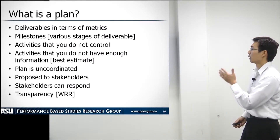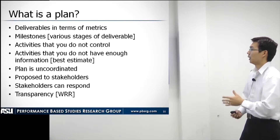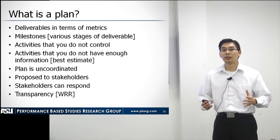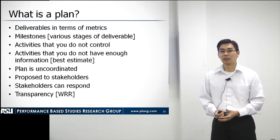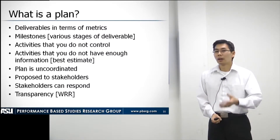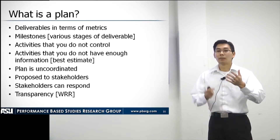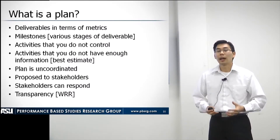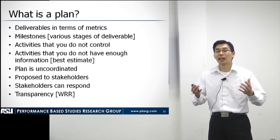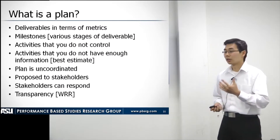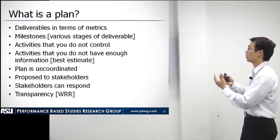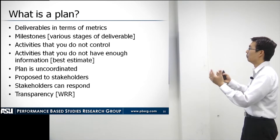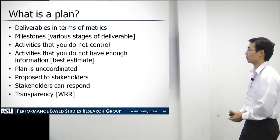We will want them to outline activities that they do not control and how they will mitigate any risk in those activities — such as someone not being coordinated with, waiting on an outside entity, or having an outside entity approve a certain item. We will want to know exactly how they will coordinate that and how they will mitigate any risk of that being a problem.